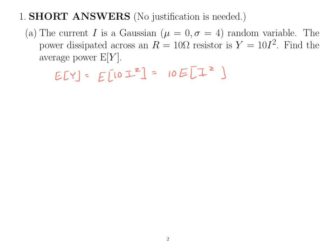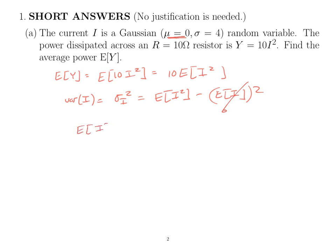If you remember, the variance of I equals σ_I² equals E[I²] minus (E[I])². In this problem, the expected value of I is zero, so E[I²] is just the variance. Therefore E[I²] = σ² = 16. And the expected power is 10 times 16, which is 160.